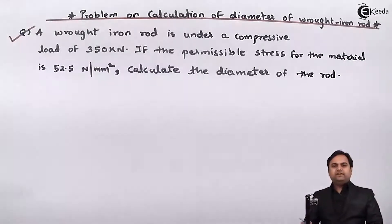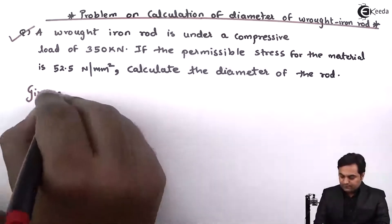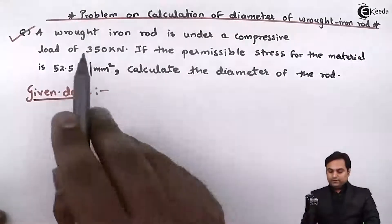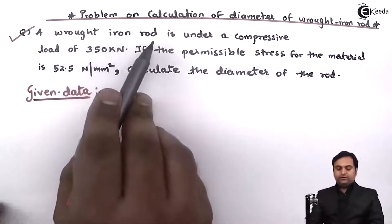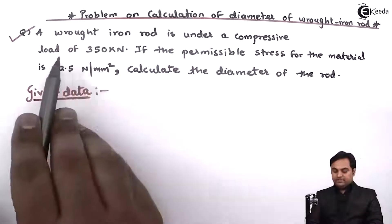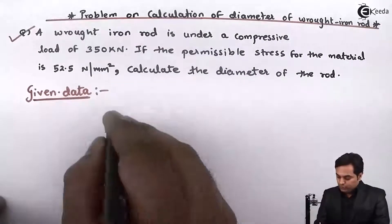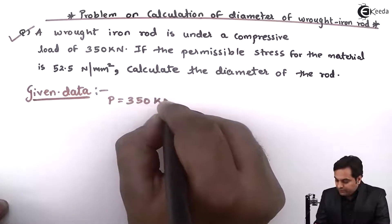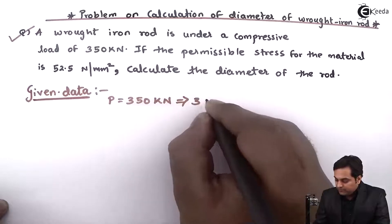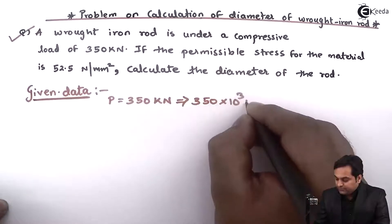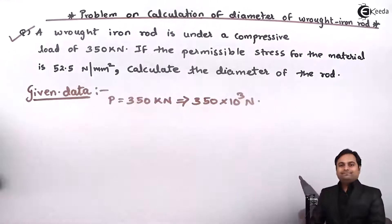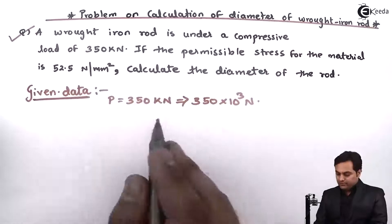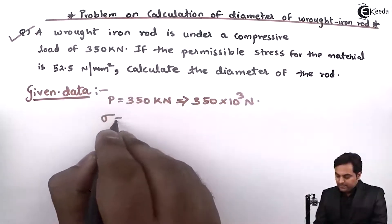Whatever is given here I will write in the form of data. Load P is equal to 350 kilonewton, which is 350 into 10 raise to 3 Newton. Permissible stress sigma is 52.5 Newton per mm square.